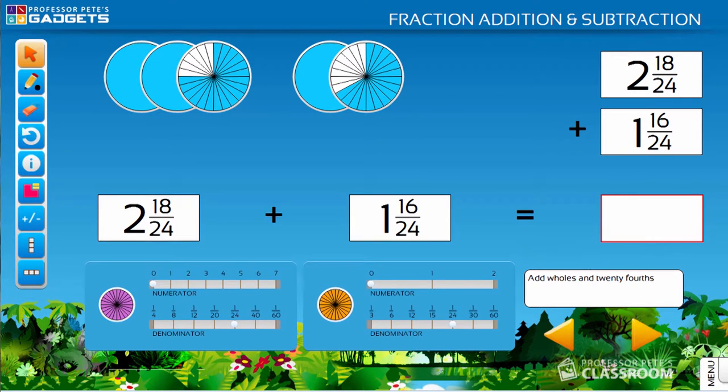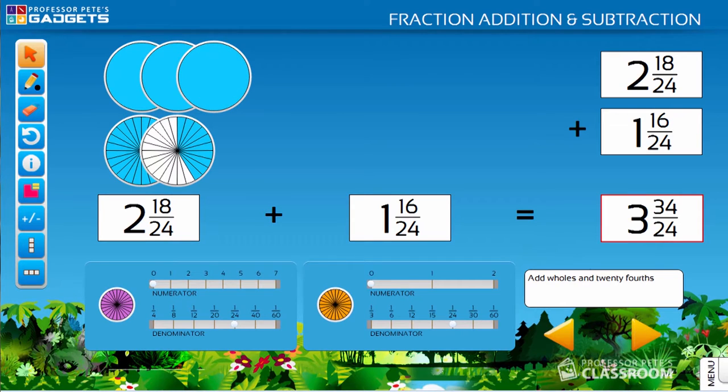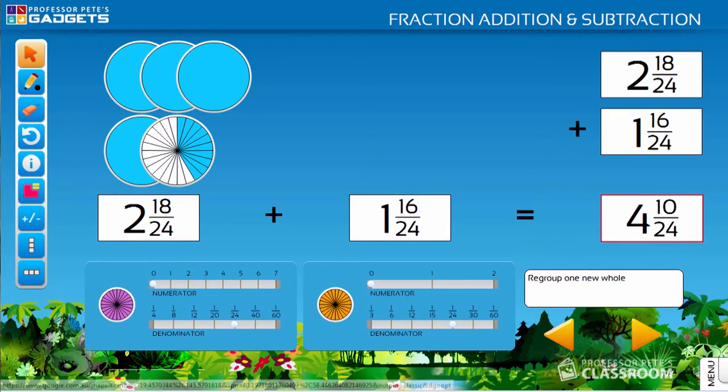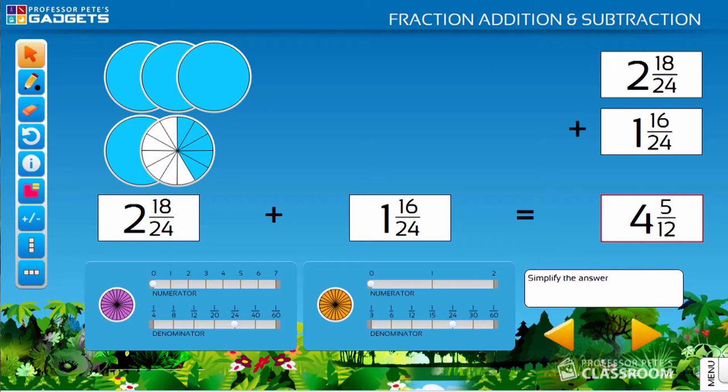Add wholes and twenty-fourths. It shows the intermediary step of three whole numbers and 34 twenty-fourths. Regroup and the answer shows 4 and 10 twenty-fourths. Simplify. Now the answer shows 4 and 5 twelfths.